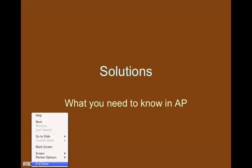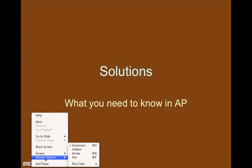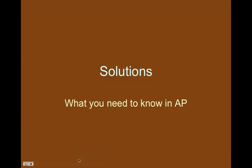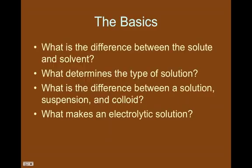Alright, so here is part one of who knows how many parts of the Solutions Notes. Remember we combined chapters 13 and 14 into one chapter. I'm basically just covering what you need to know out of that chapter for AP. If I don't cover it, you don't need to worry about it. The first four things I'm going to talk about are the differences between solute and solvent, the types of solution, the differences between a solution, a suspension, and a colloid, and what you need to know about electrolytes.